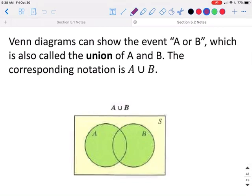Venn diagrams can show the events A or B, which is also called the union of A and B. The corresponding notation is A looks like a U between them for union and then B. So this means A or B. This would include anything in just A and just B or where the two intersect as shown in the highlighted portion.